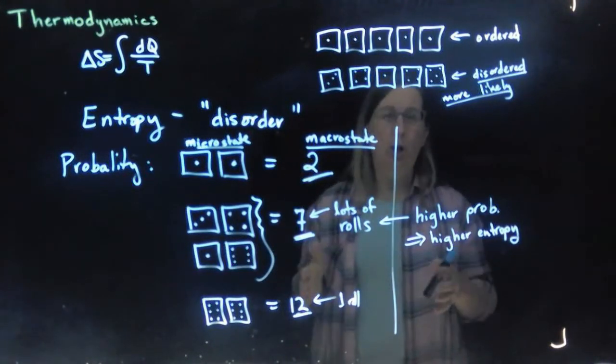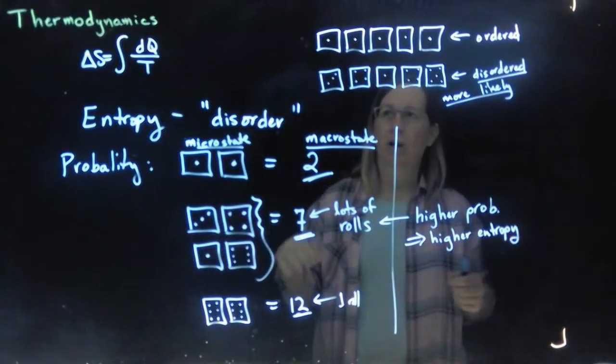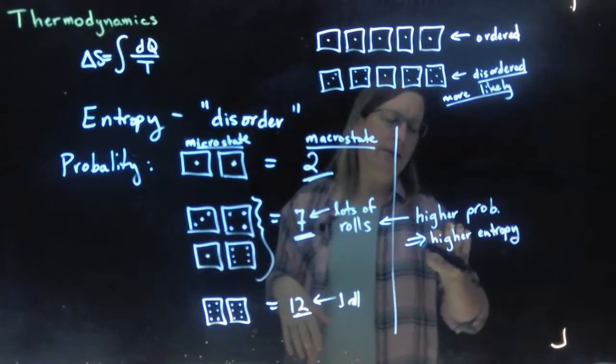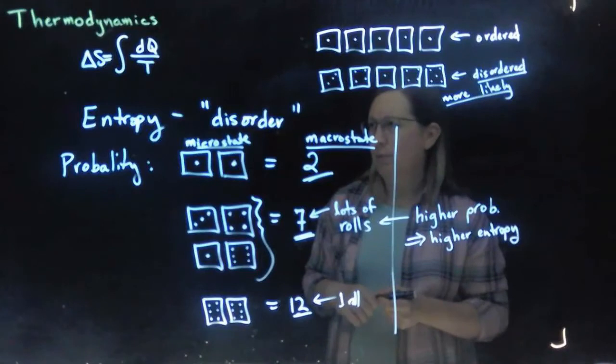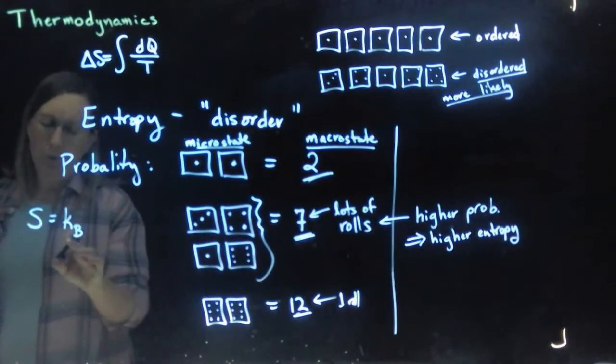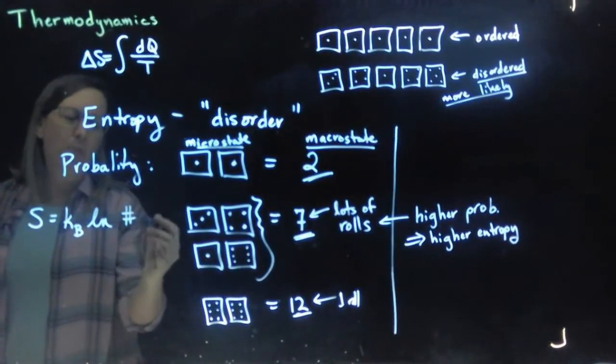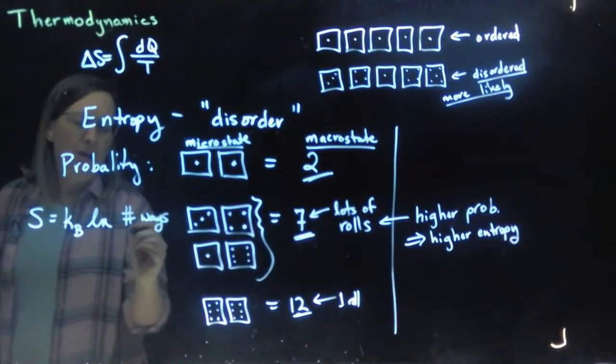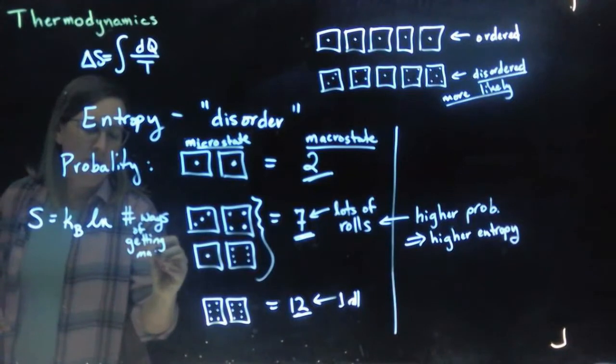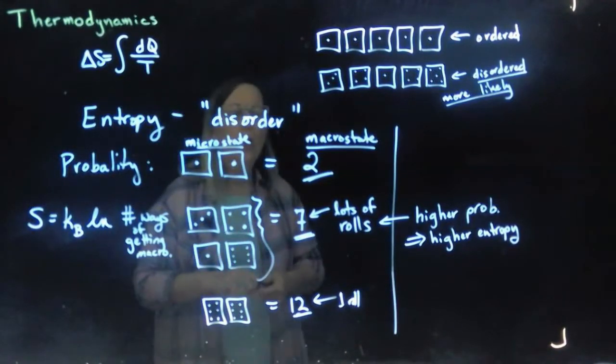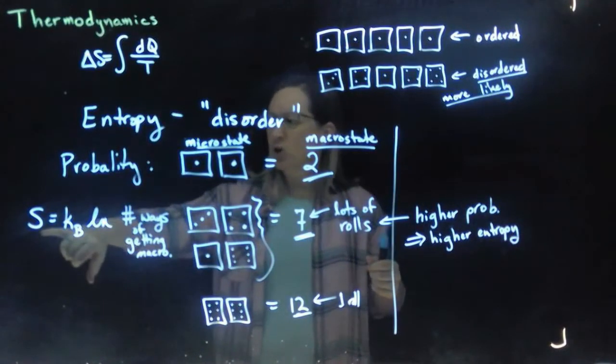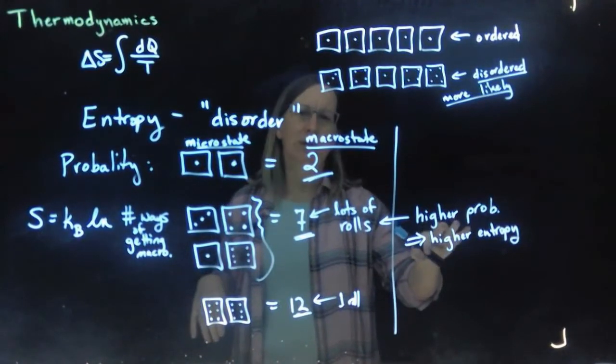then the idea of all Avogadro's numbers worth of atoms lining up in a certain way is highly unlikely. So, it's more likely that you're going to be in the higher probability states, and our measurement of entropy is measuring this higher probability. So, in terms of the statistical count, we say entropy is equal to Boltzmann's constant, that gives us our units, times the natural log of the number of ways, it's called the multiplicity, number of ways of getting a particular macrostate. So, there are many ways to get two objects in thermal equilibrium. There are fewer ways for them to move away from equilibrium. So, this increasing entropy is really about increasing higher probability.